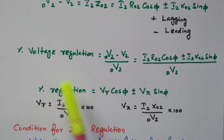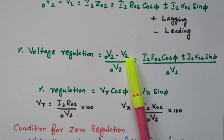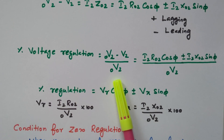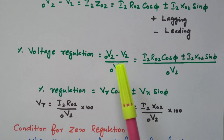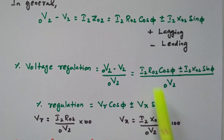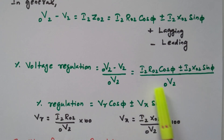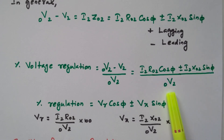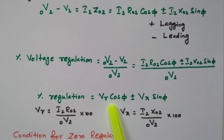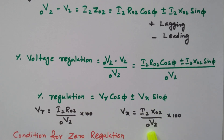Now we go to the voltage regulation formula. That is the no-load secondary voltage minus full-load secondary voltage, divided by no-load secondary voltage. So: (I2·R02·cos φ ± I2·X02·sin φ) divided by no-load secondary voltage. This can be written as Vr·cos φ ± Vx·sin φ, where Vr = I2·R02 divided by no-load secondary voltage, and Vx = I2·X02 divided by no-load secondary voltage, multiplied by 100.